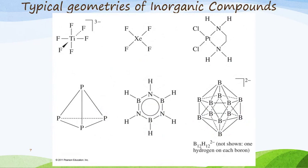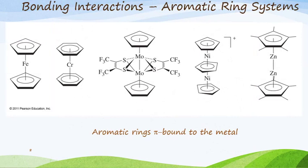We get some typical geometries of inorganic compounds that are vastly different to what you've been used to seeing in first-year chemistry, and some of them are very complex. Sometimes we see bonding interactions where metals interact with aromatic ring systems. This molecule here is called ferrocene, and this one is called chromene. On the right-hand side we have very complicated structures where aromatic rings interact with metal ions and metal atoms, because the electron density is able to fill the orbitals of these metal atoms.